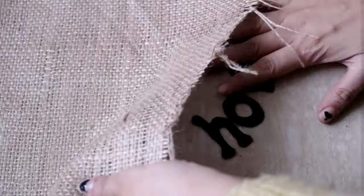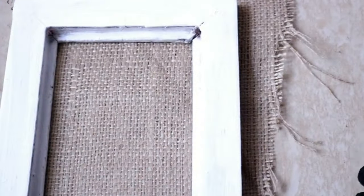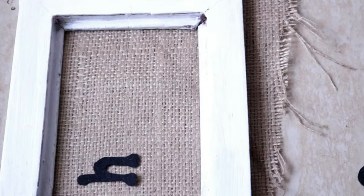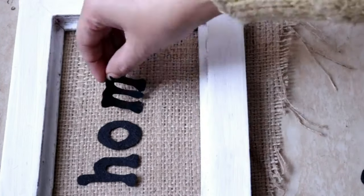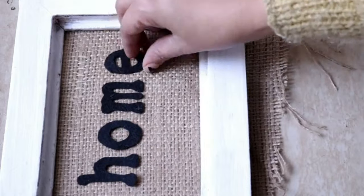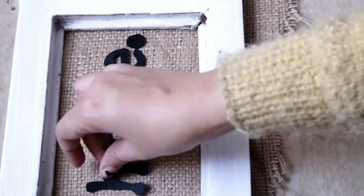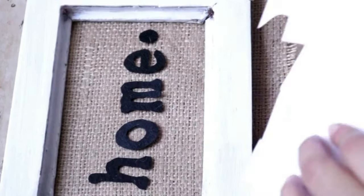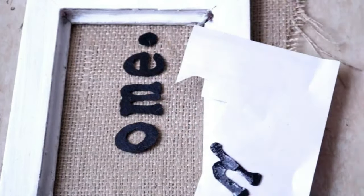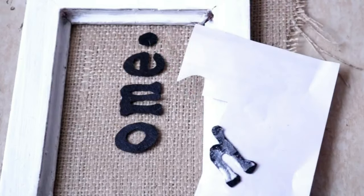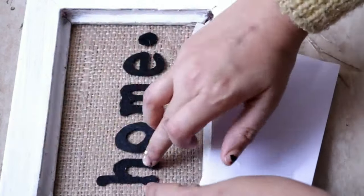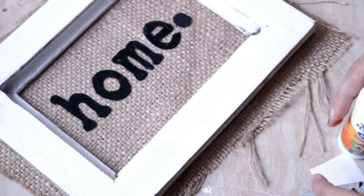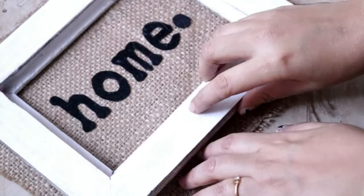I want the wall art to say home, so that is why I have cut four letters accordingly. Now I am placing them on the burlap sheet and then I will adjust them so that I stick them at the proper position. Now I am going to use some white glue. You can use any glue for sticking these felt alphabets on the burlap sheet. Once we are done sticking the alphabets, then we will stick the burlap fabric onto the wall frame.